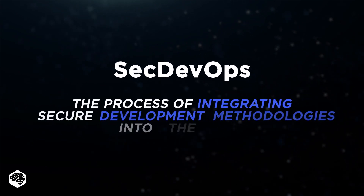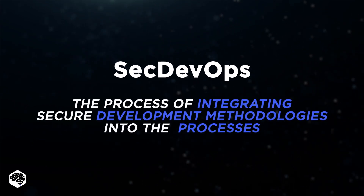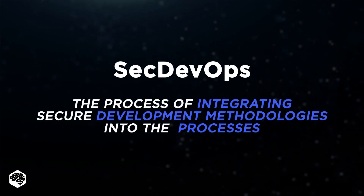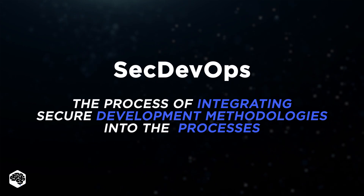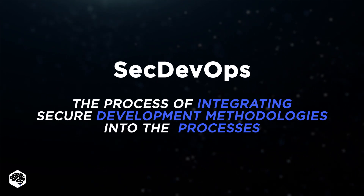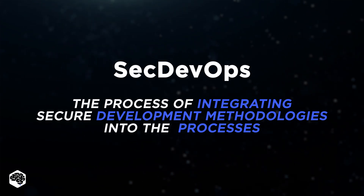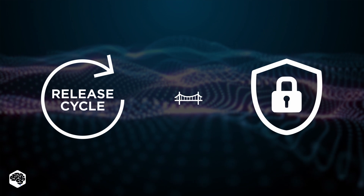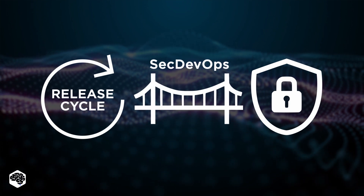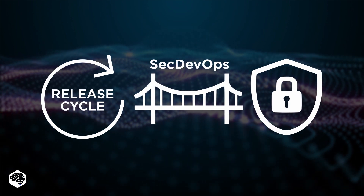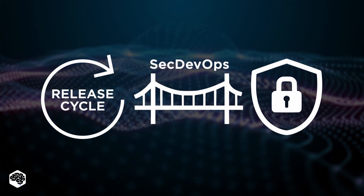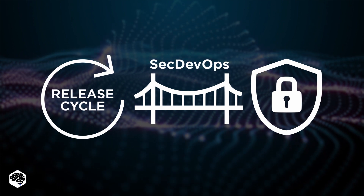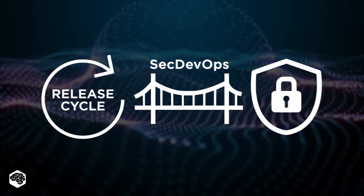SecDevOps is the process of integrating secure development best practices and methodologies into the development and deployment processes that DevOps makes possible. SecDevOps helps bridge the gap between continuous release cycles and security needs by addressing security at every stage of the SDL.